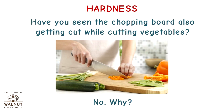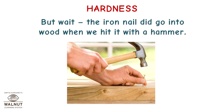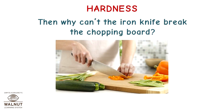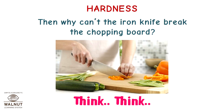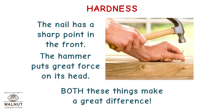Have you seen the chopping board also getting cut while cutting vegetables? No — because the chopping board is harder than the knife. Chopping boards are always made of hard materials like wood or plastic. But wait — the iron nail did go into wood when we hit it with a hammer. Then why can't the iron knife break the chopping board? The nail and the knife have different shapes. The nail has a very sharp point at its tip, and the hammer puts great force on its head. Both these things make a great difference.